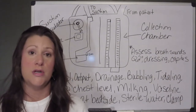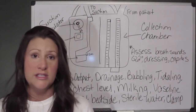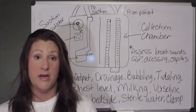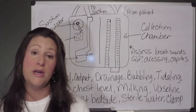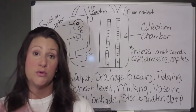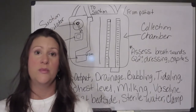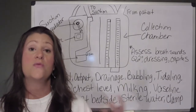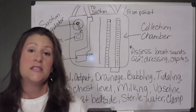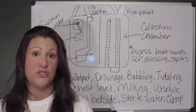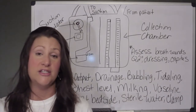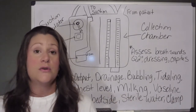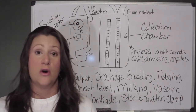For the most part, chest tubes are inserted to facilitate lung re-expansion when a patient has a pneumothorax or a pleural effusion — where there's either air building up within the pleural space or fluid building up within the pleural space that's preventing full lung expansion. Sometimes you'll also see mediastinal chest tubes that are inserted in the sternal area after CV surgery, and those are inserted to prevent cardiac tamponade.